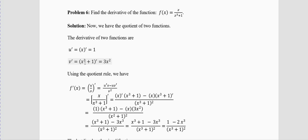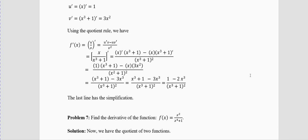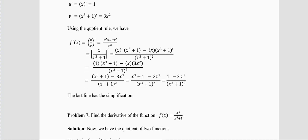The derivative of x is 1. The derivative of x³+1 is 3x²+0 = 3x². 'Quotient' means you are dividing the first function by the second function. Now apply the quotient rule. Your differentiation is again over in the second line.